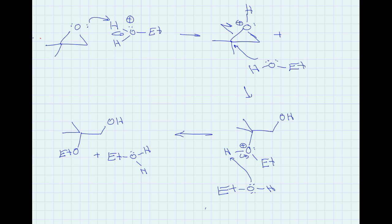So this is why we draw the mechanism with protonated ethanol — it's a much weaker acid than sulfuric acid, therefore the equilibrium lies to the side of the weakest acid. In the end we generate our product and regenerate our acid. The sulfuric acid is only used as a catalyst to generate the protonated ethanol, and it keeps generating it over and over. That is how the mechanism proceeds.